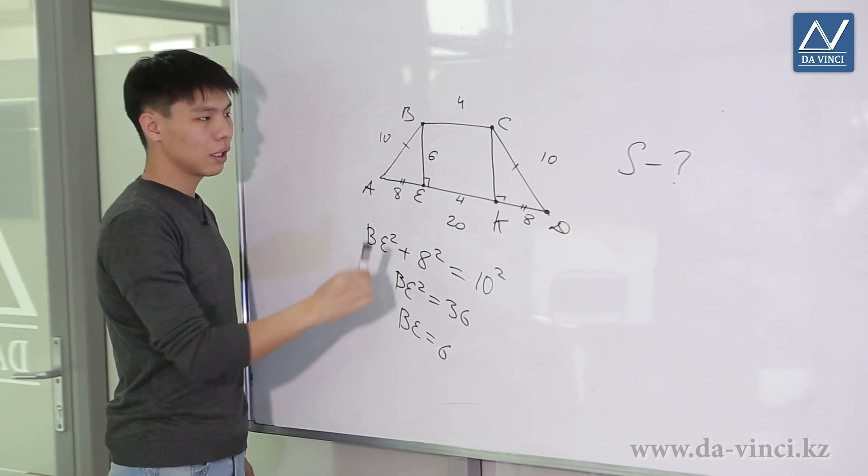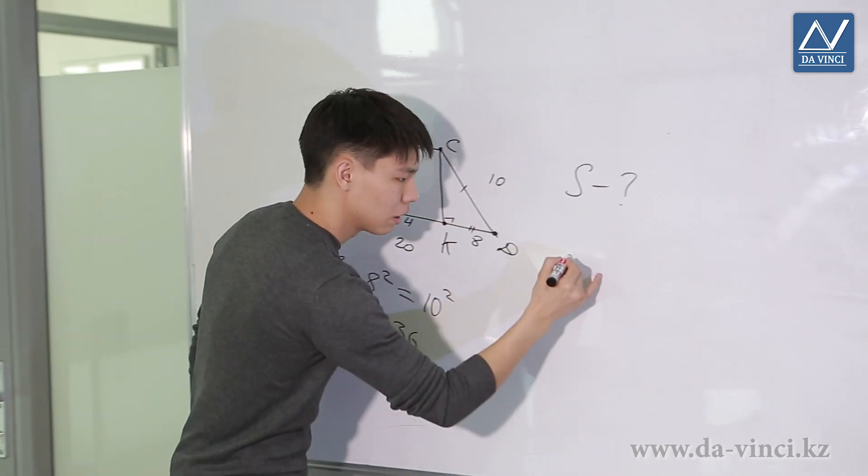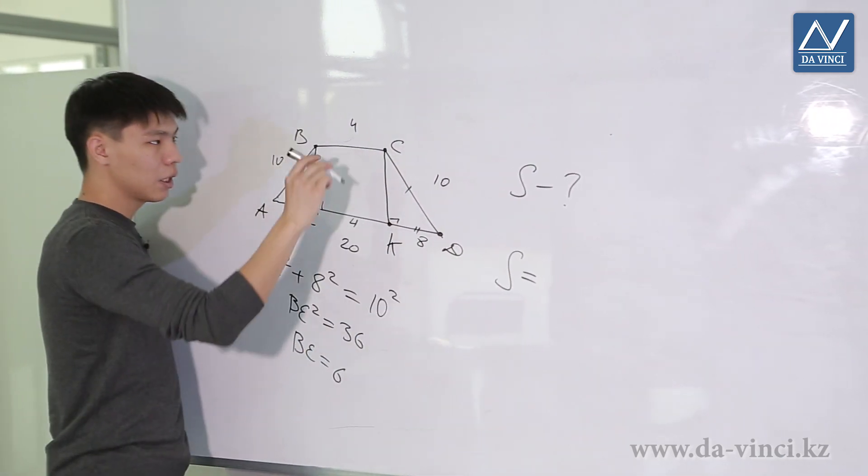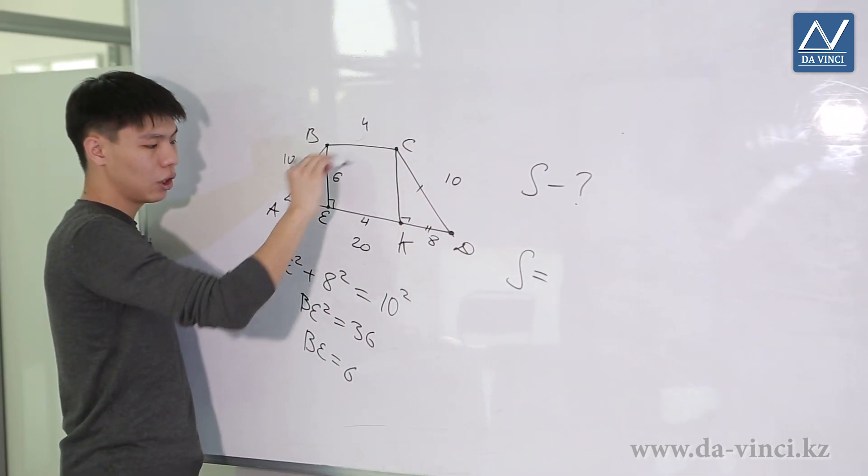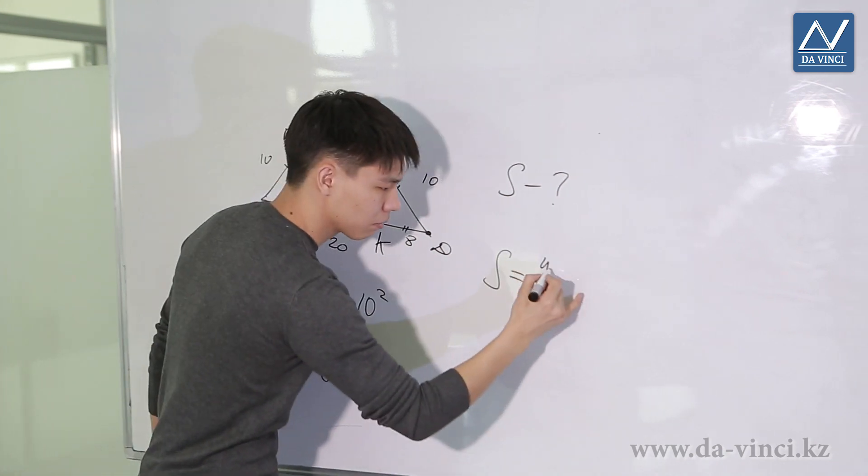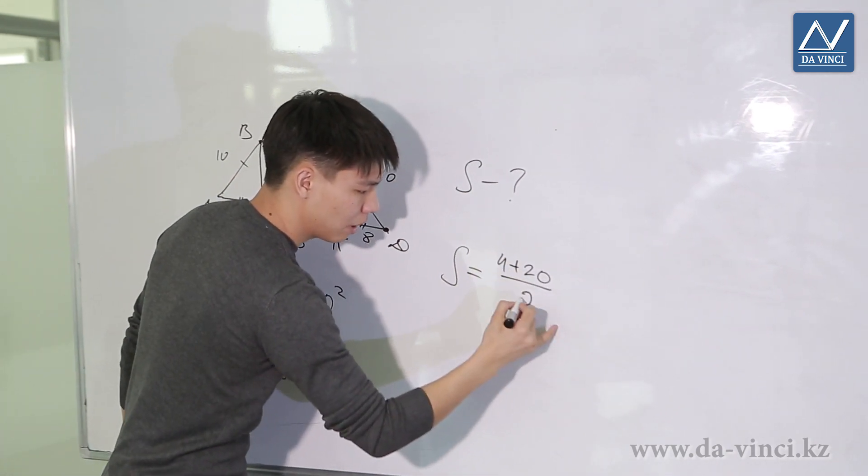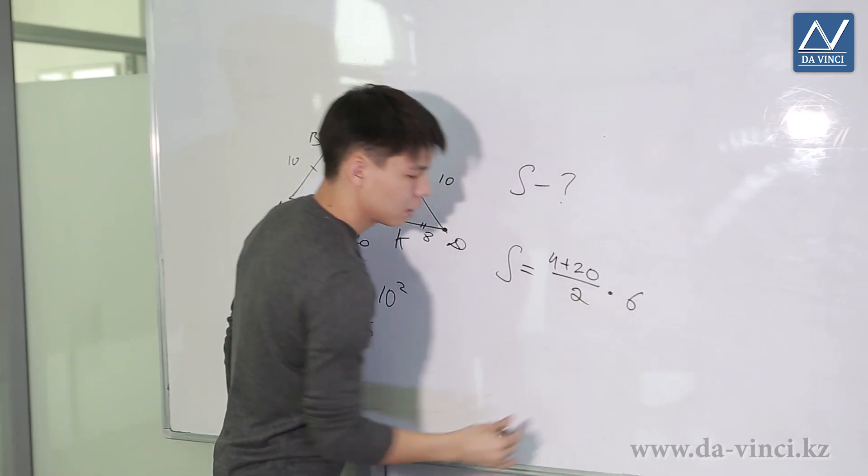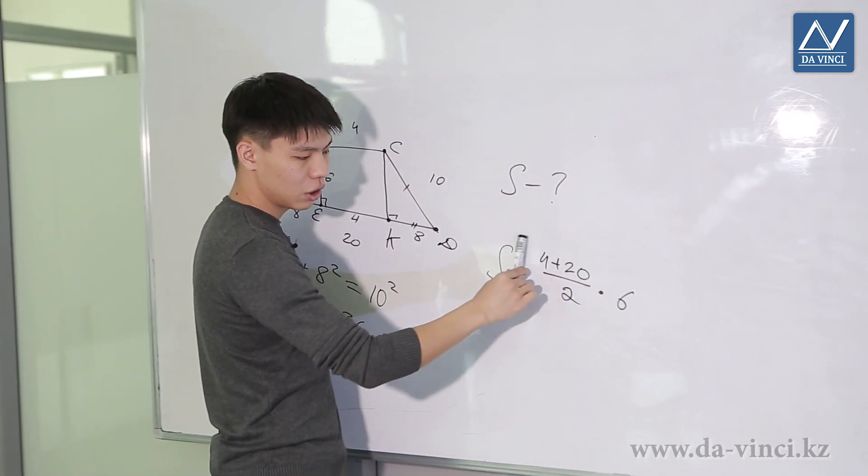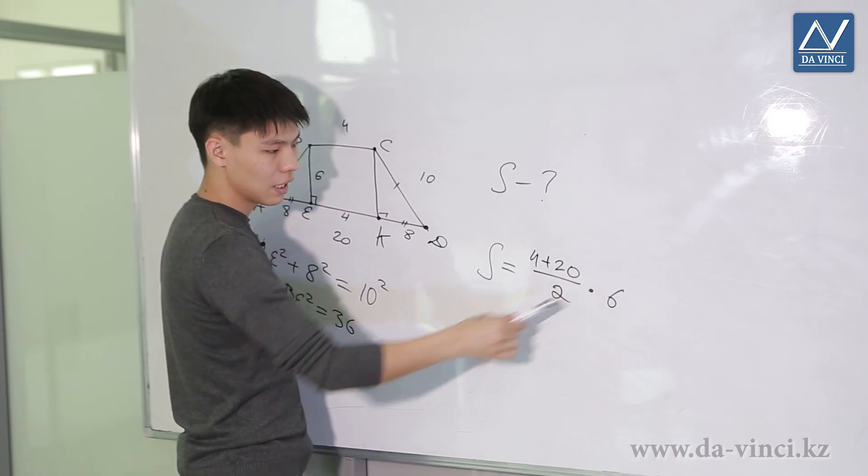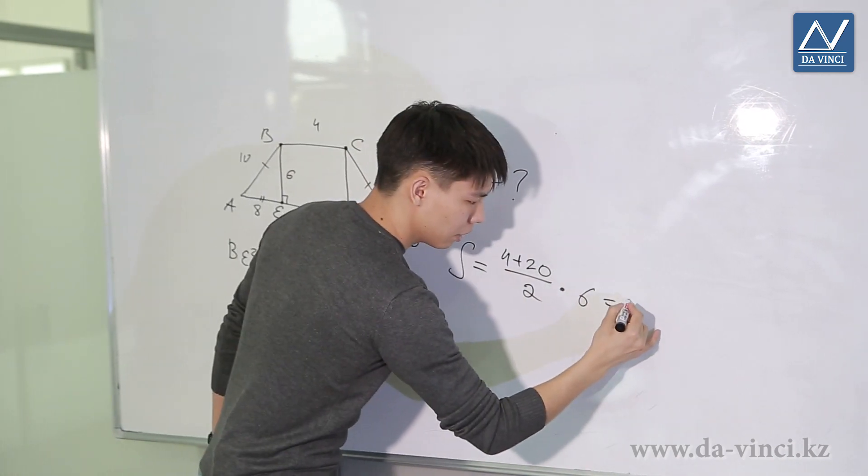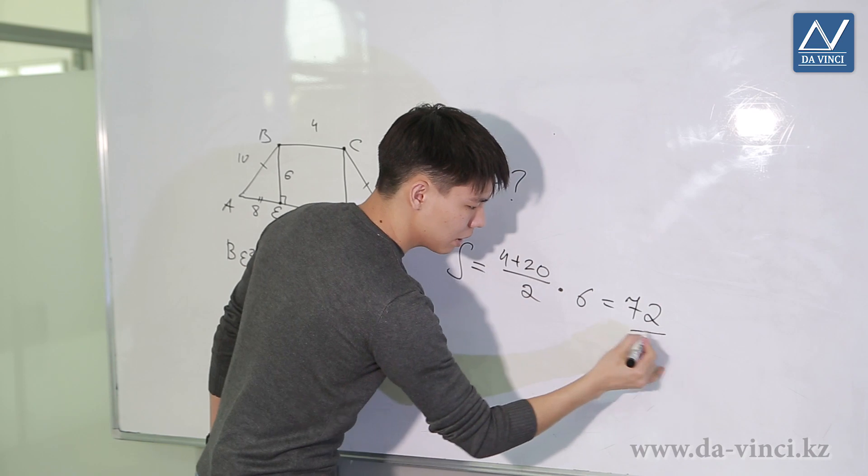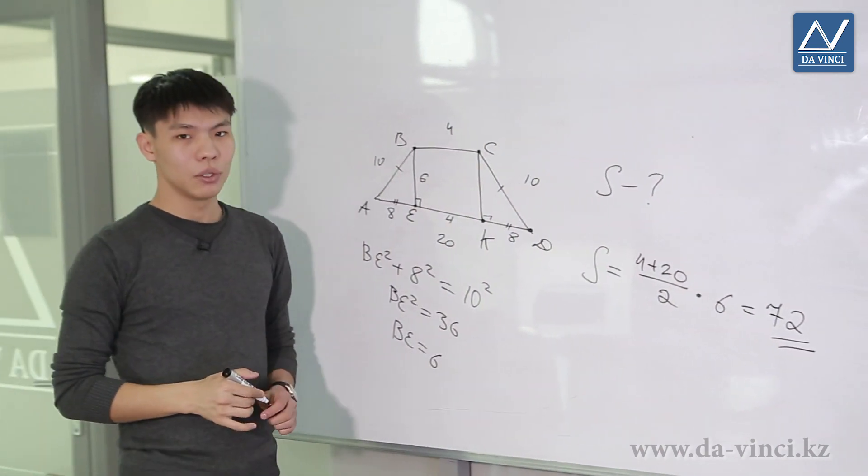Now we can find the area very easily. We know the area of the trapezoid, that is half the sum of the bases, that is 4 plus 20 in half. And we multiply it by the height of the trapezoid, by 6. We have 24 divided by 2 here and we get 12. Then we multiply 12 by 6 and we get 72. So the area of the trapezoid is 72.